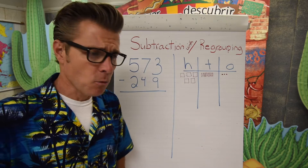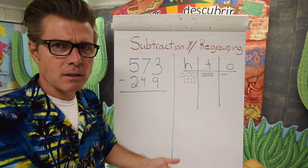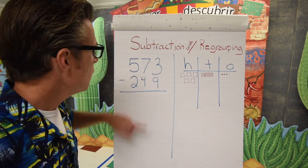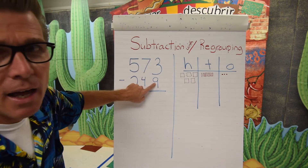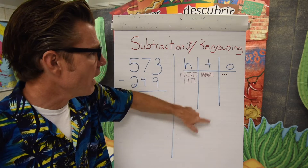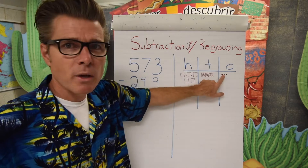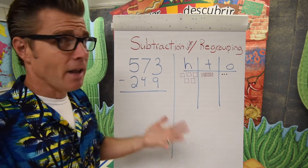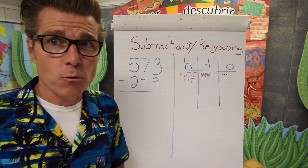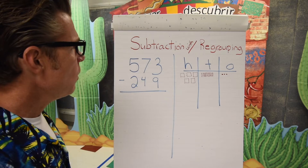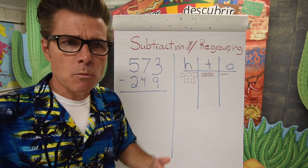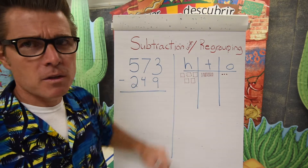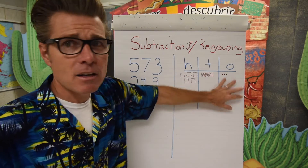In subtraction we start with the ones place. We're going to start with the ones and move to the tens, then move to the hundreds. So we have a three and we're taking away nine. We visit the ones place and we have three — it's not possible to take away nine from three, so we're going to regroup. We're going to borrow.